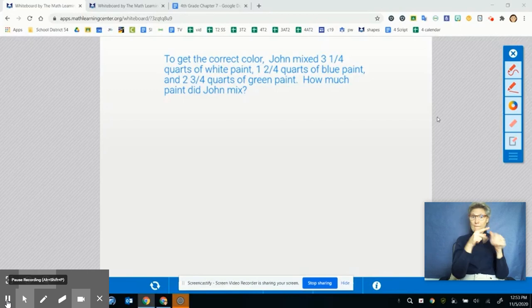It says, to get the correct color, John mixed three and one-fourth quarts of white paint, one and two-fourths quarts of blue paint, and two and three-fourths quarts of green paint. How much paint did John mix?